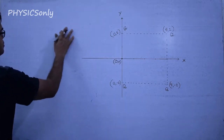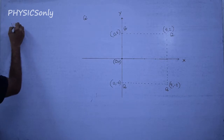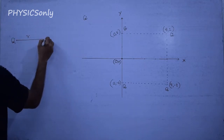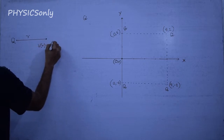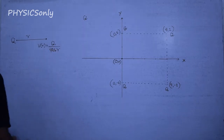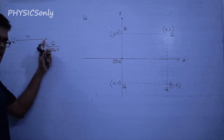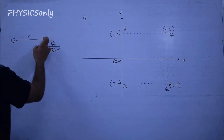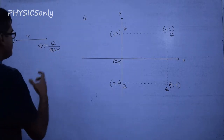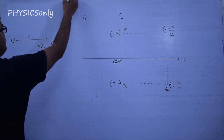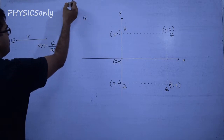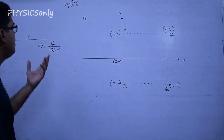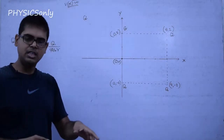Let us discuss what the potential is. Say there is only one charge Q₁, and at a distance r from that charge, the potential V(r) is Q₁ divided by 4πε₀r. At infinity, we say our potential is zero — that is why for basic electrostatic calculations we assume that at infinity our potential is zero.